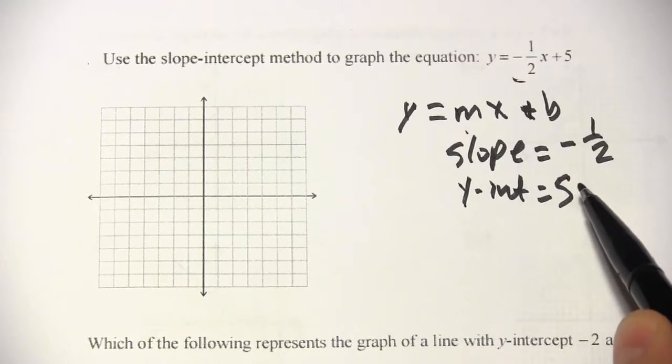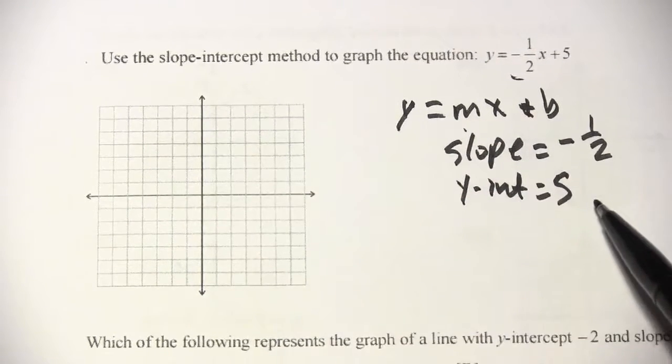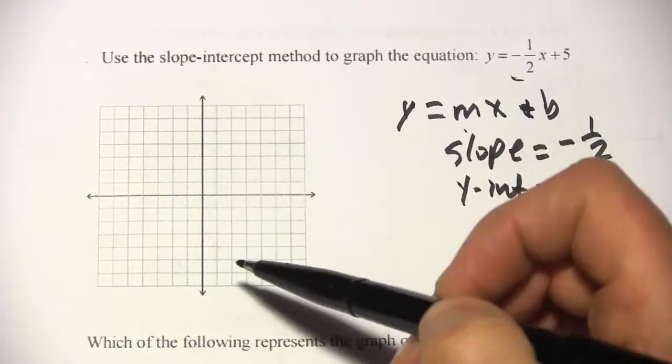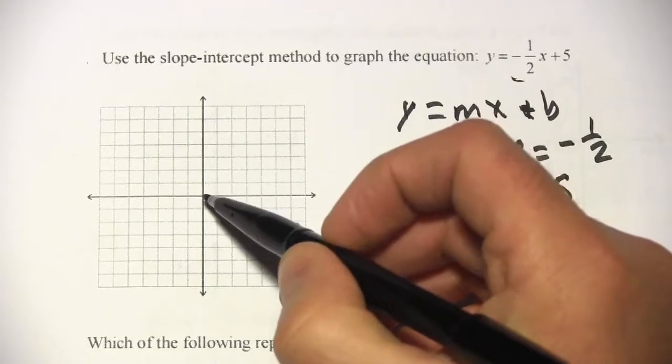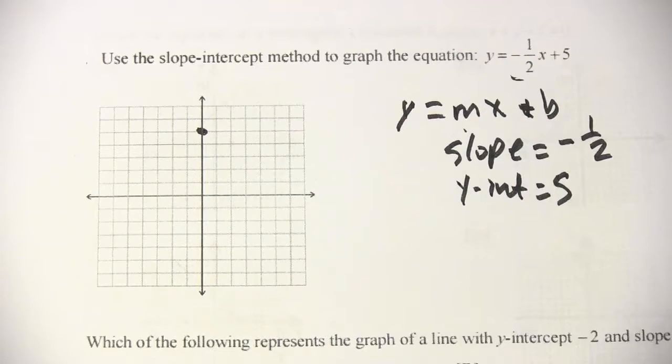So the first thing I would do is just plot the point for the y-intercept. The y-intercept is the point where the line crosses the y-axis, so this is the y-axis. And we want to go up to 5, so 1, 2, 3, 4, 5. So there's our y-intercept.